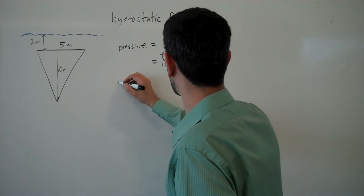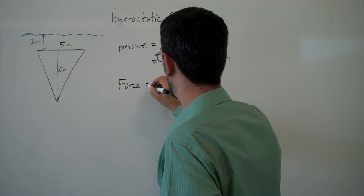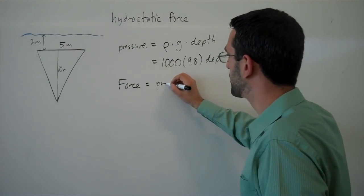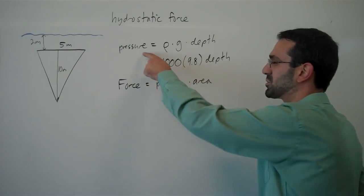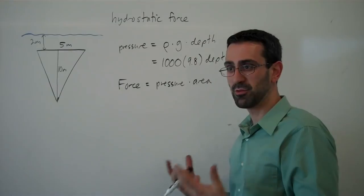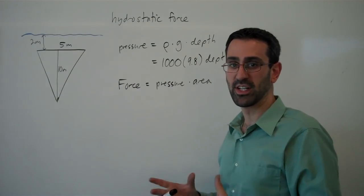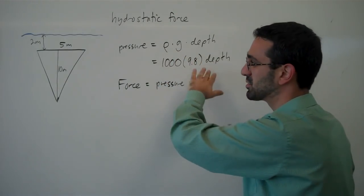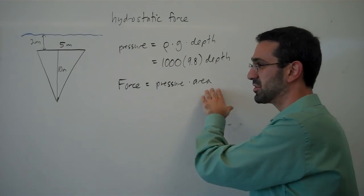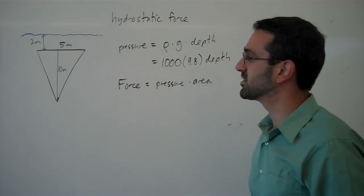Force, then, for hydrostatic force, will be pressure exerted over some area. Pressure is typically measured in force per area unit, like pounds per square inch, or here, newtons per square meter. We'll multiply that by an area to find the total force.